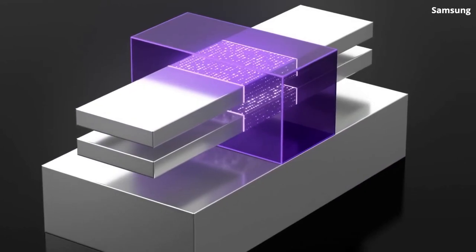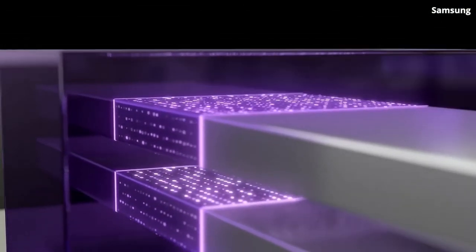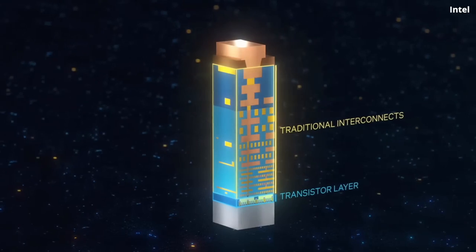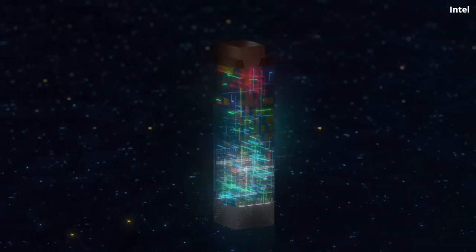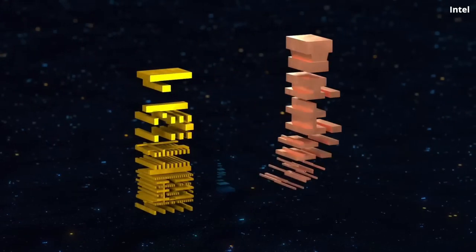Cerebra's flagship product, the WSC-3 processor, is built on a 5-nanometer process and boasts over 900,000 compute cores and 44GB of onboard memory. That's 52 times more cores than a single NVIDIA H100 GPU. How does this translate to real-world performance gains?